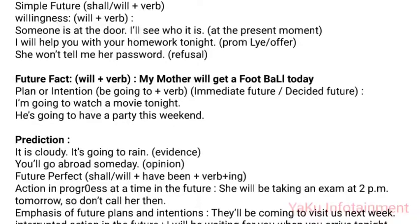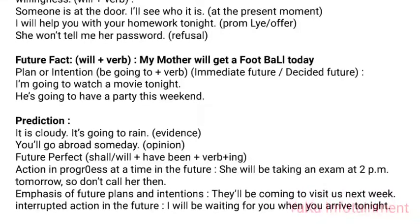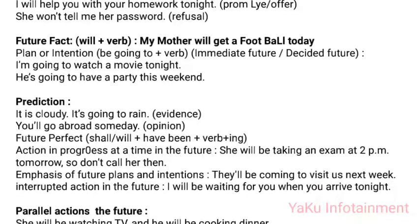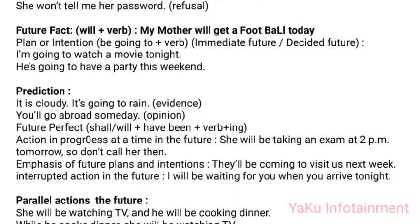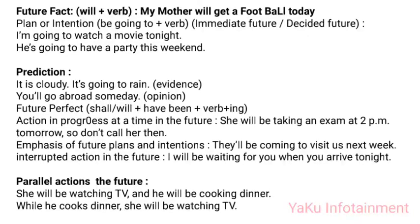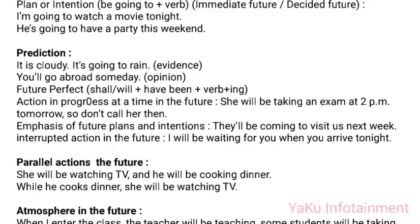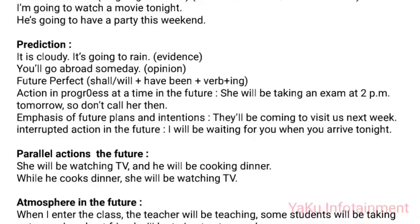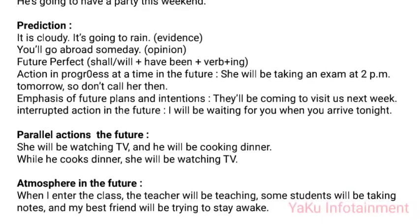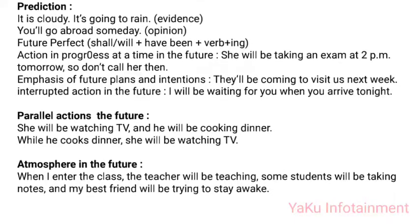Going to + verb for prediction based on evidence: 'It is cloudy — it's going to rain.' Future Continuous (shall/will + have been + verb-ing): (1) Action in progress at a time in the future: 'She will be taking an exam at 2pm tomorrow, so don't call her then.' (2) Emphasis of future plans: 'They'll be coming to visit us next week.' (3) Interrupted action in the future: 'I will be waiting for you when you arrive tonight.' (4) Parallel future actions: 'She will be watching TV and he will be cooking dinner.' (5) Atmosphere in the future: 'When I enter the class, the teacher will be teaching, some students will be taking notes, and my best friend will be trying to stay awake.'